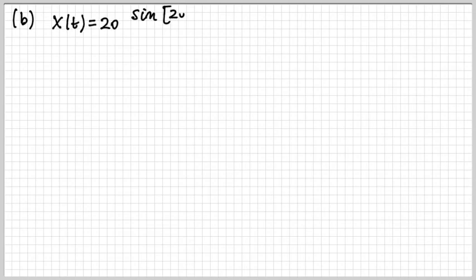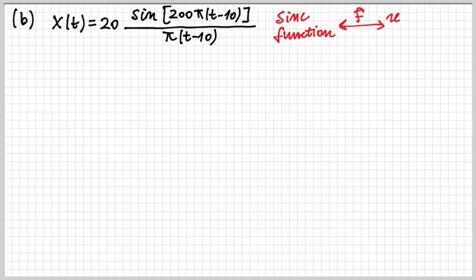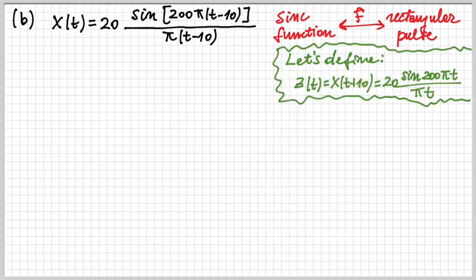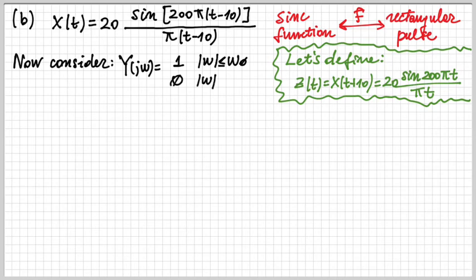Moving to part b, which is a little more involved: the signal x(t) is 20·sin(200πt - 10) / (π(t - 10)). This is a sinc function, and the Fourier transform of a sinc is a rectangular pulse — we need to find the right rectangular pulse. For convenience, I define z(t) = x(t + 10) to remove the shift, giving z(t) = 20·sin(200πt) / (πt), a sinc function. I will bring the shift back later.